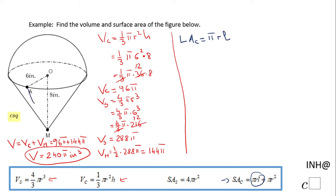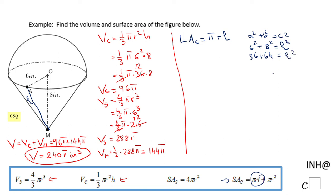The slant height is any segment that connects a point on the circumference of the base, like point A, to the vertex M — and that forms a right triangle. So to find the slant height I'm going to use the Pythagorean theorem: A² + B² = C². In our case A is 6 and B is 8. We have 36 plus 64 equals L squared, so L² = 100, and L = √100 = 10. That is the slant height.